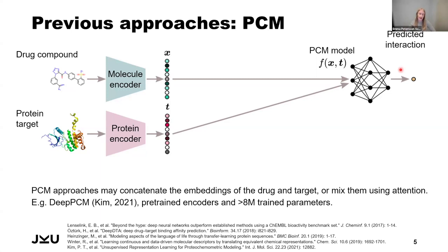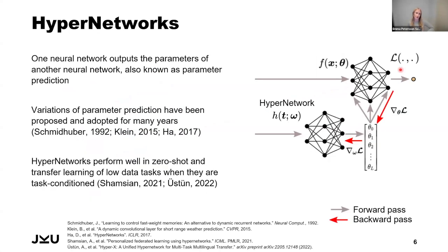This model can now actually make predictions for zero-shot tasks, but it's still not performing very well in that setting. So we aim to improve this and we take inspiration from a kind of model called hypernetworks. These are neural networks that predict the parameters of other neural networks — also called parameter prediction. It's a concept that has been around for quite a while with different variations. It started with something called fast weights proposed by Schmidhuber in the 90s, then dynamic convolutions proposed by Klein and others, and finally the term hypernetworks was coined by Ha and others in 2017.